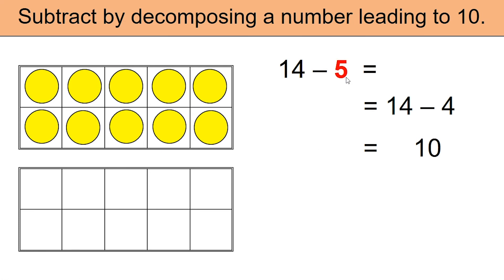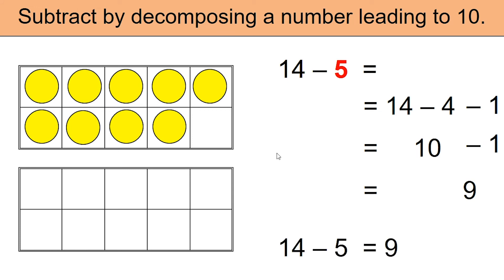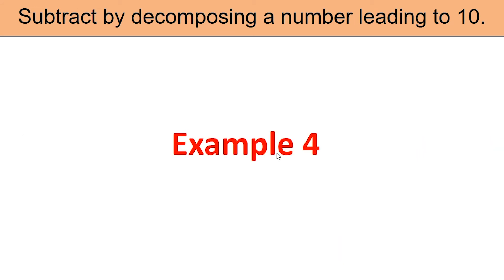But remember, we needed to subtract 5. Since we only removed 4, we need to remove one more. Let's go ahead and remove that one. Now you are left with 9, so 14 minus 5 is equal to 9.